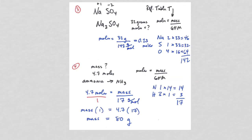Questions 3 and 4: in question 3 you're given mass and solving for moles; in question 4 you're given moles and solving for mass. The formula is on reference table T: moles = mass ÷ gram formula mass. Calculate the gram formula mass for each compound — 32 g/mol and 142 g/mol — then plug and chug. The answer for number 3 is 0.23 moles, and for number 4, 4.7 moles × 17 g/mol gives 80 grams.